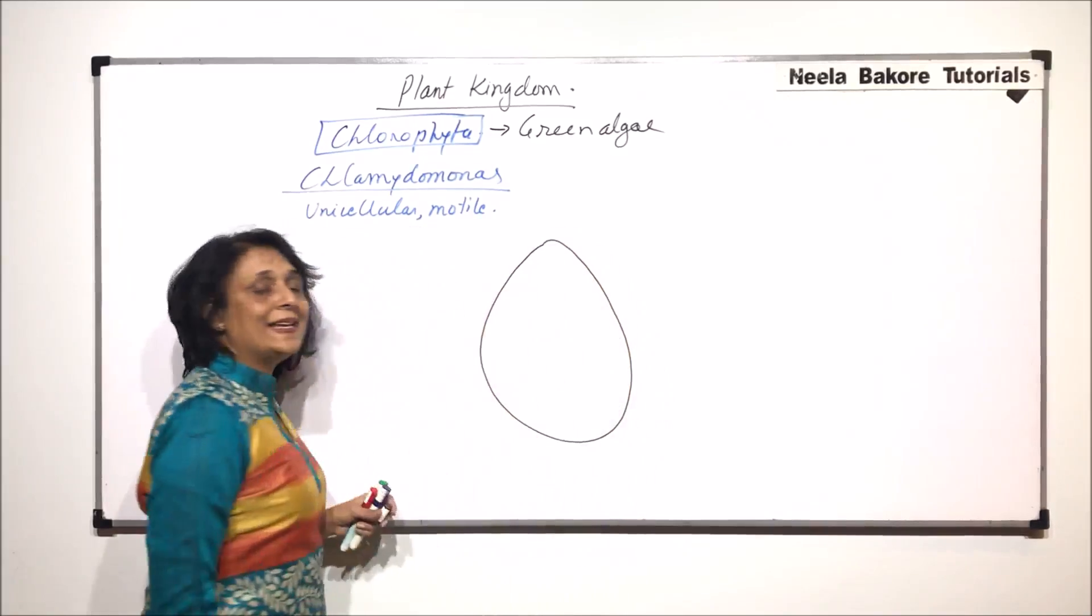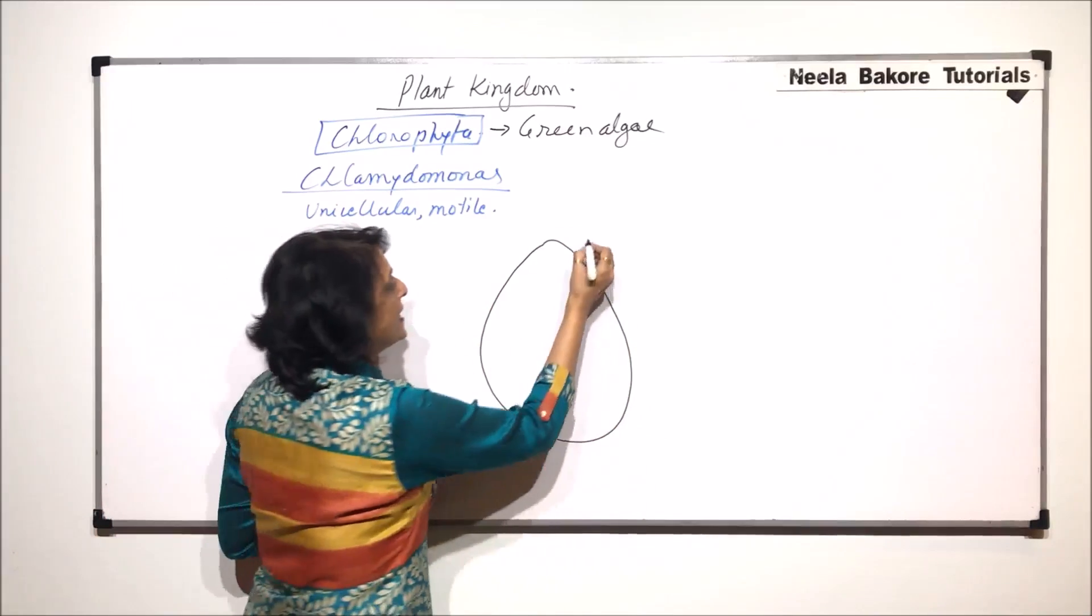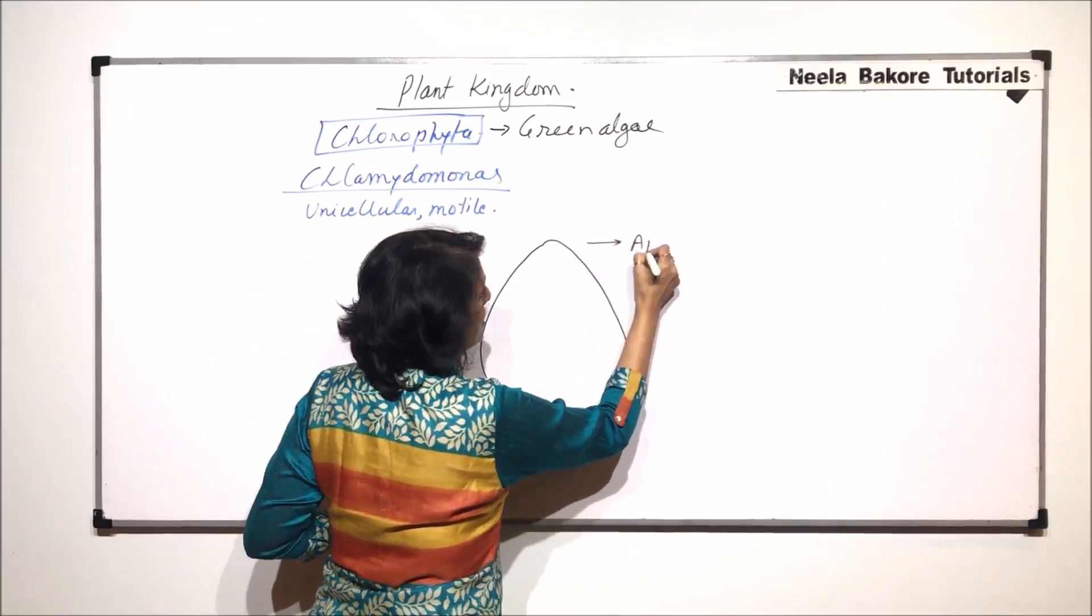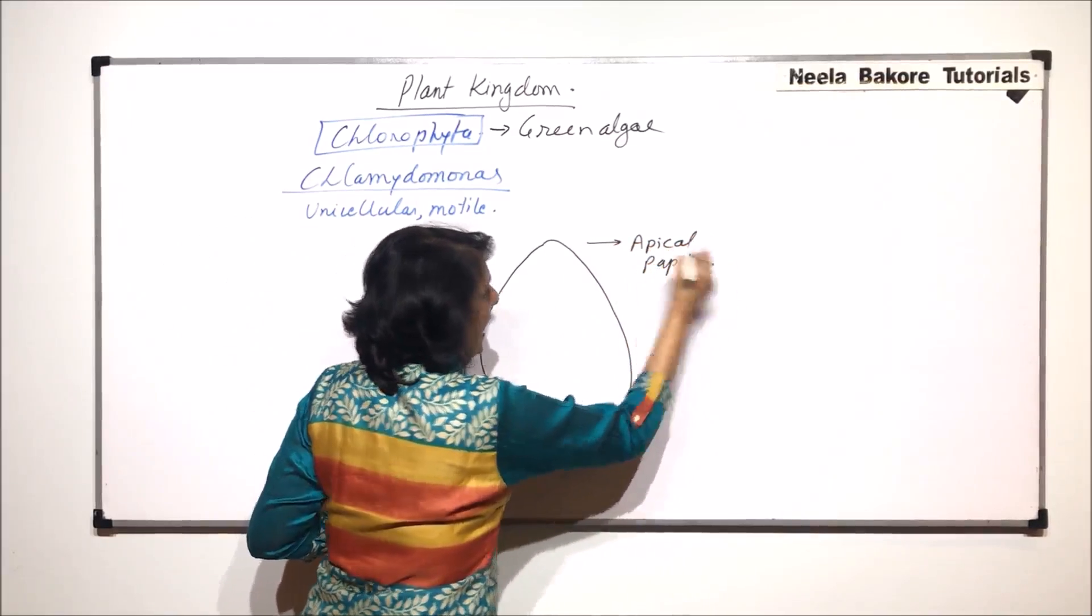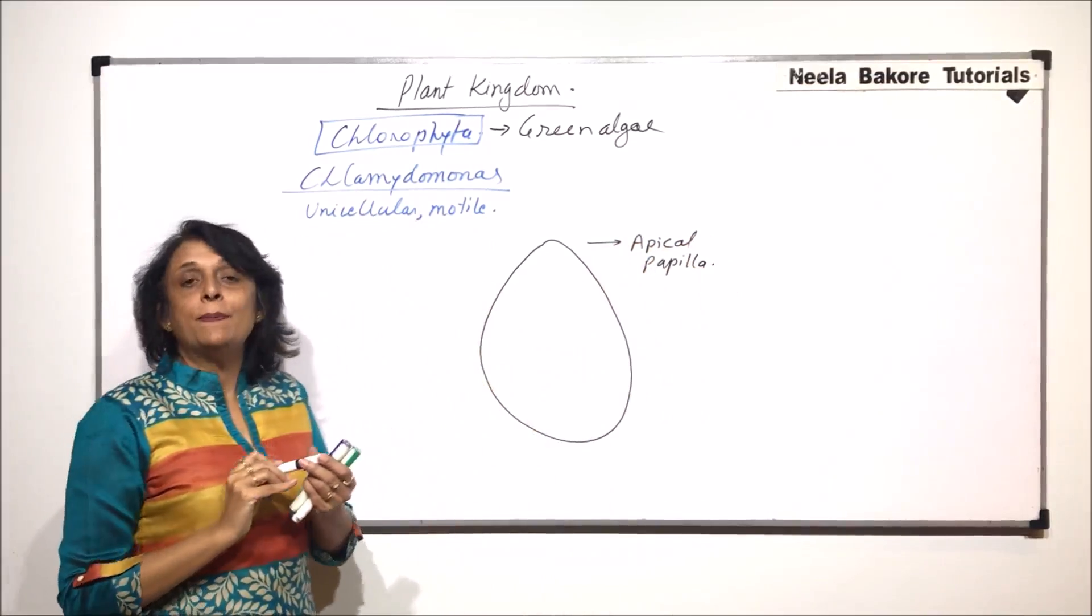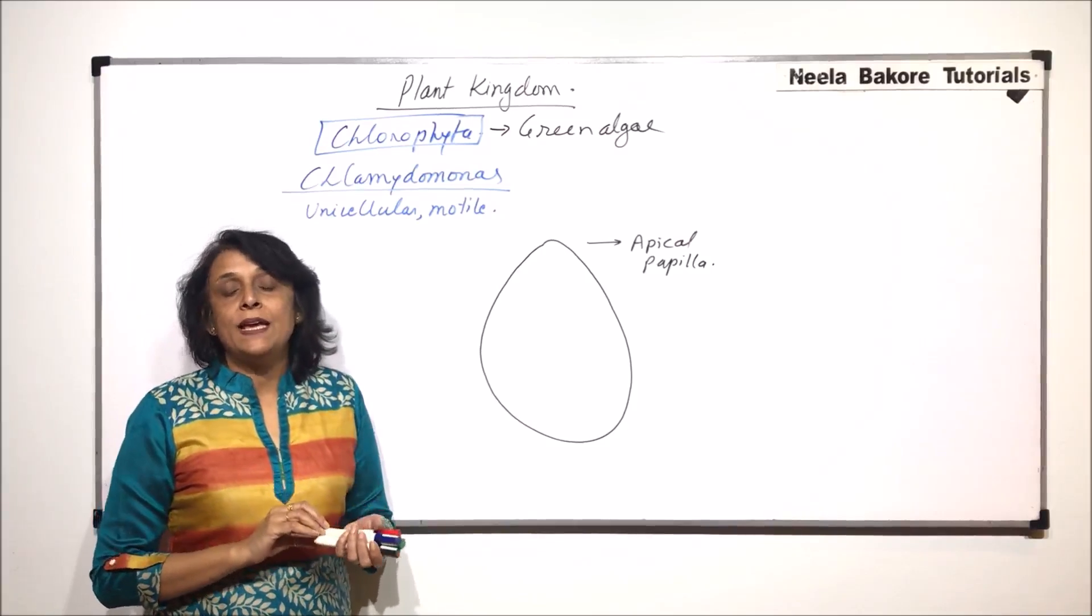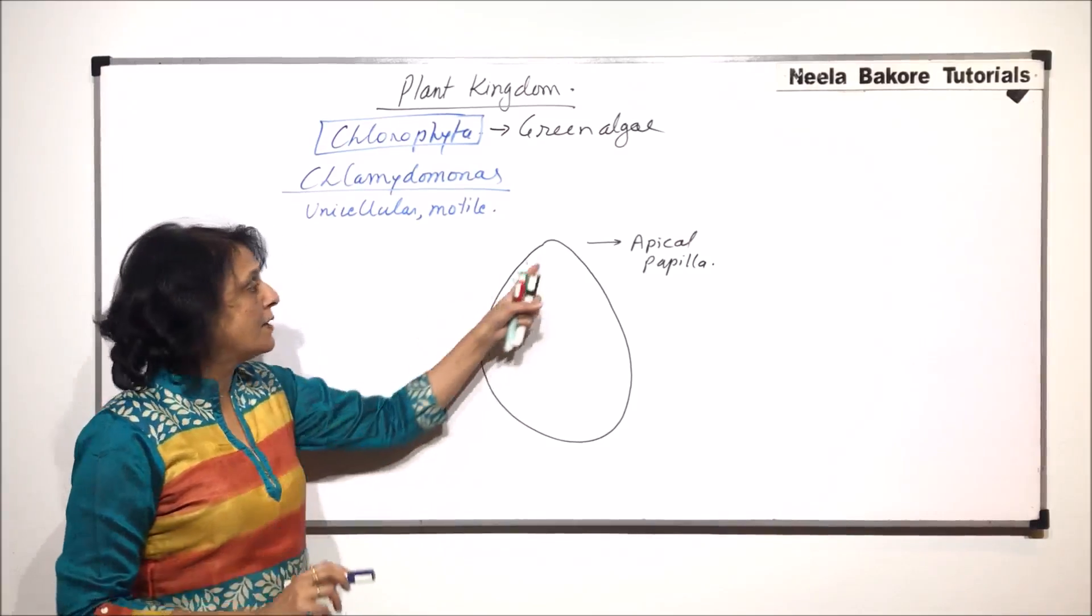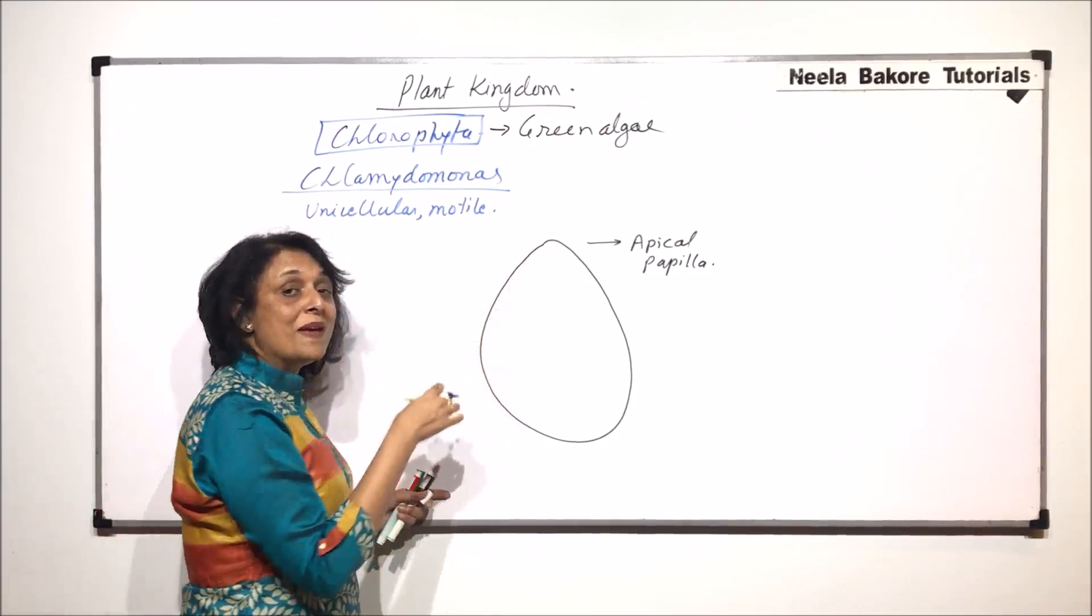The anterior end has a pointed structure which is known as the apical papilla. And from the apical papilla we find the two anteriorly placed flagella which arise. We will draw those things a little later.